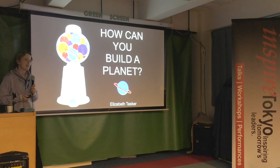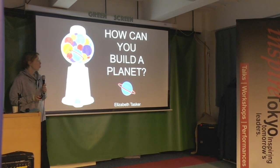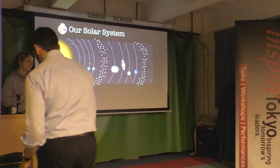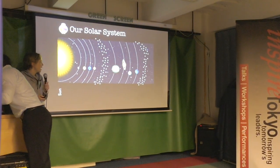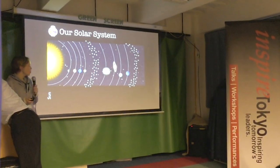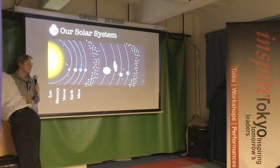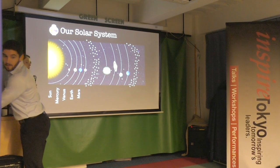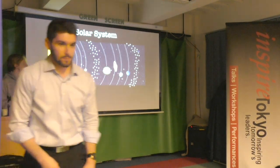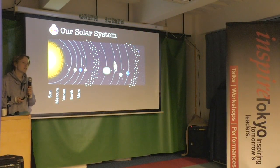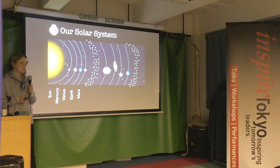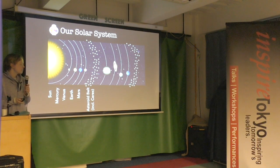I'm going to start with what I hope is a fairly familiar planetary system to you all. We have the Sun, our nearest star, and then four small rocky worlds: Mercury, Venus, Earth, and Mars. Beyond Mars, we have a band of rocky, rubbly leftovers from the planet formation process.